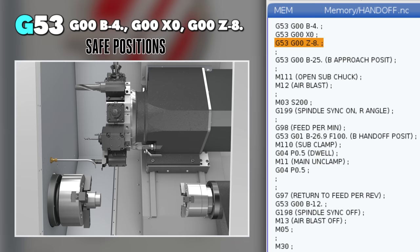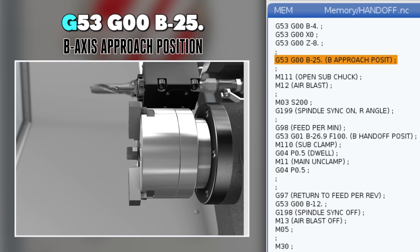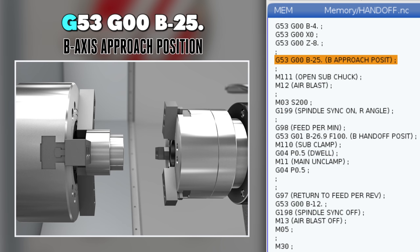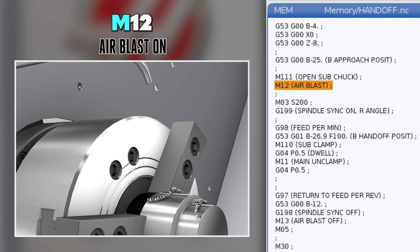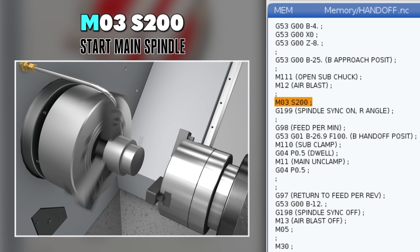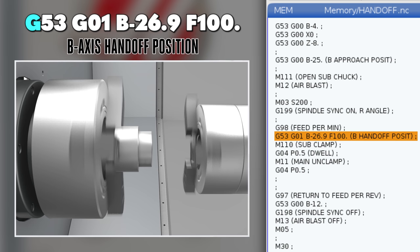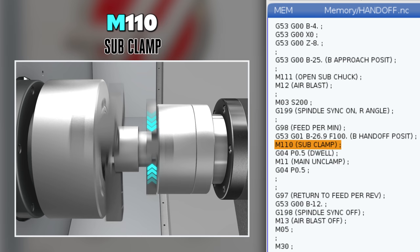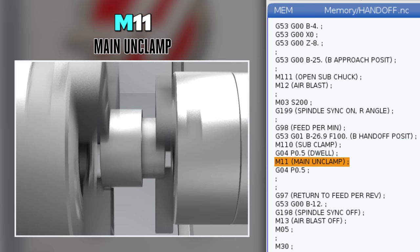Now we went through that pretty fast. Let's slow that down and watch it one more time. We're positioning the turret up and out of the way to a safe location along with the B axis using G53 moves. Then we bring in our B axis sub spindle into an approach position using another G53. We open up the chuck on the sub spindle using an M111, turn on our air blast with an M12, start the main spindle at a reasonable RPM, then sync both spindles using our G199 command. We feed our B axis before clamping that sub spindle chuck with an M110, open up the main spindle with an M11, another G4 dwell making sure it has enough time to fully open before we retract out of the way to machine that second operation.